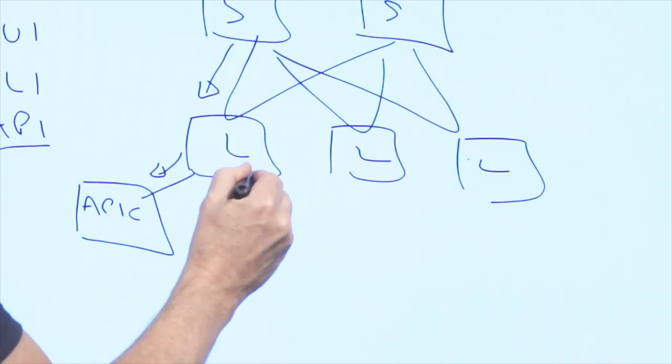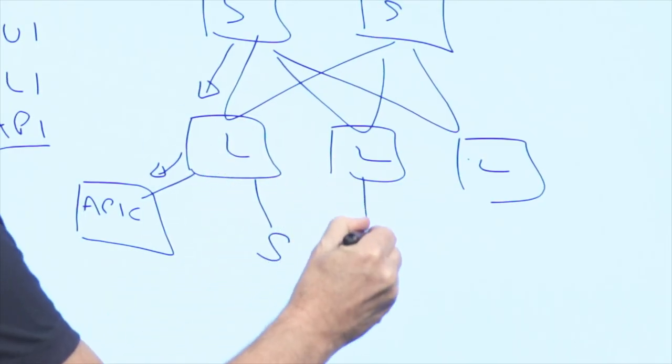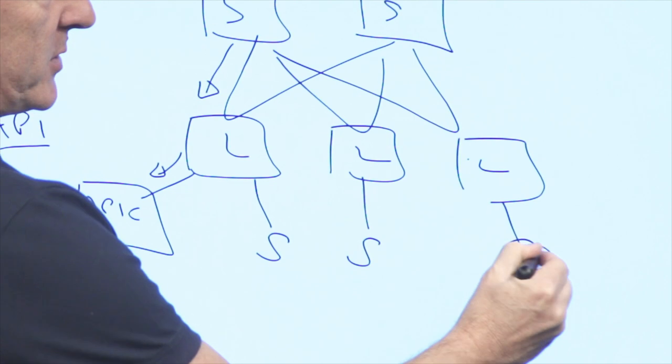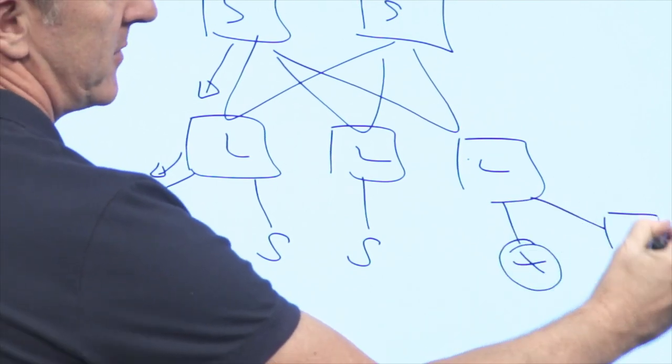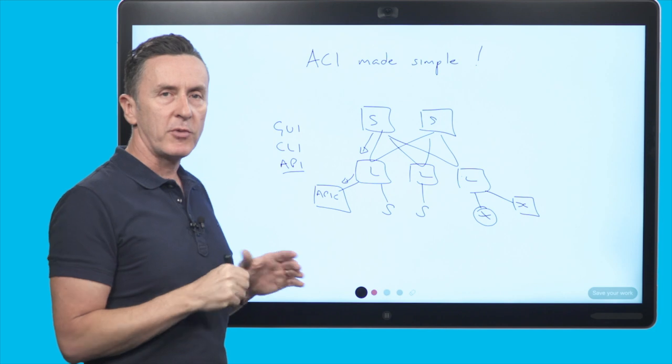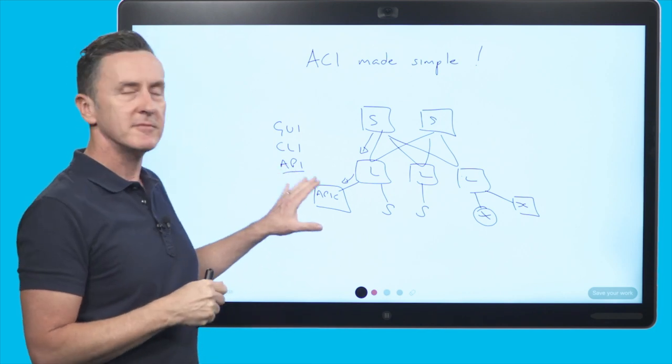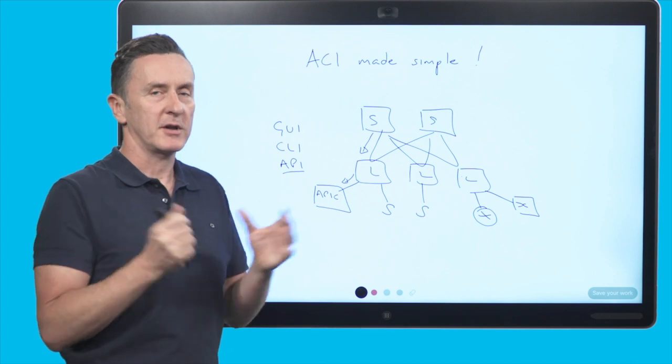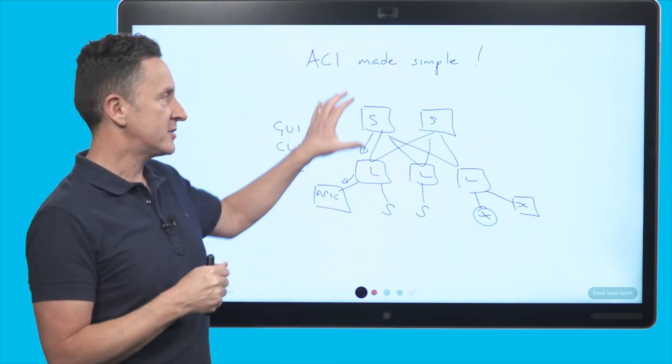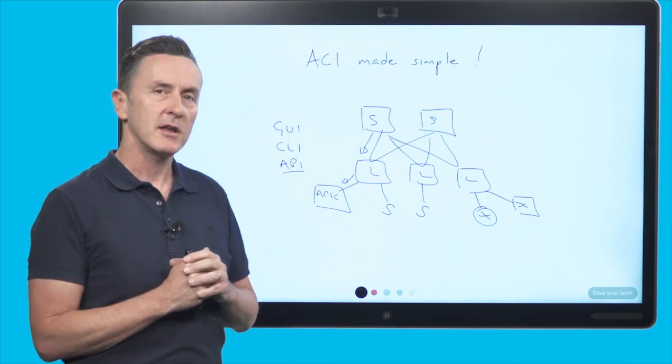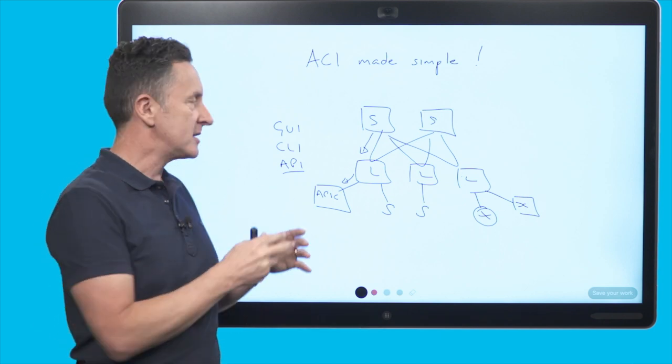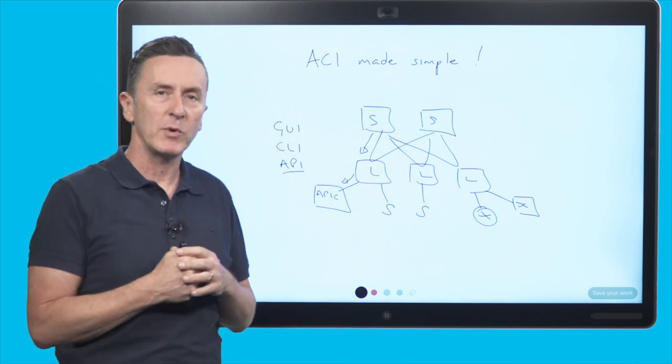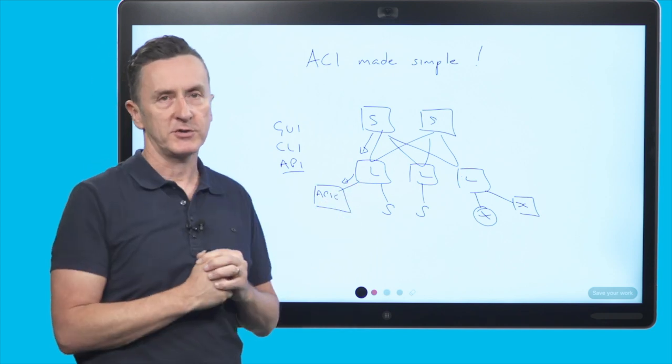Once we've built out our infrastructure what we're going to attach is our servers and our external routers and switches always to the leaf switch. So in the most basic topology nothing attached to the spine. There's always an exception so when we look at multipod networks for example we attached external routers to the spine but for your basic building blocks and to get the customer really understanding how we build things I always stick with this very simple topology.